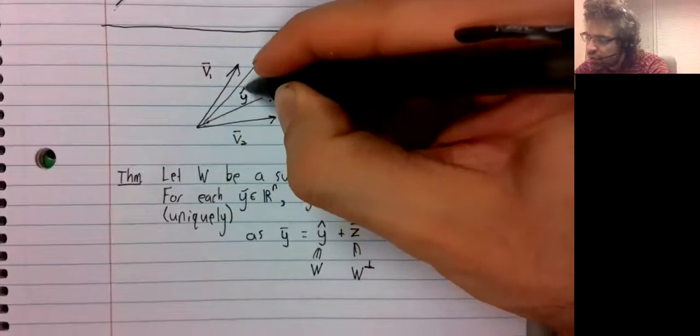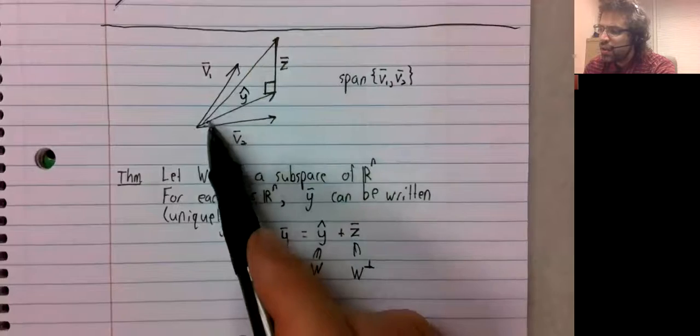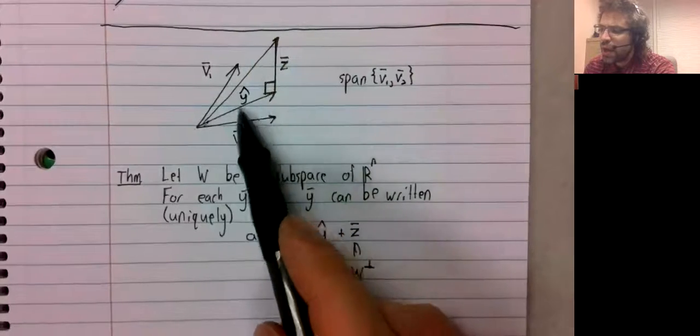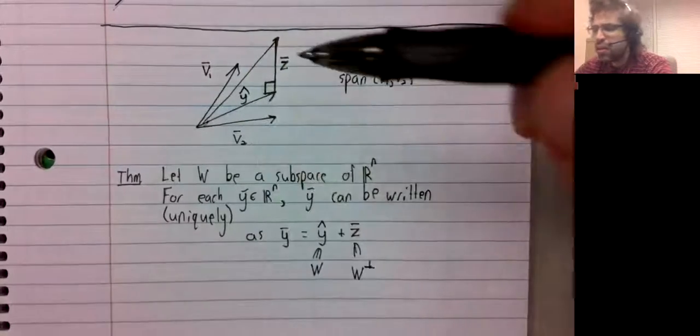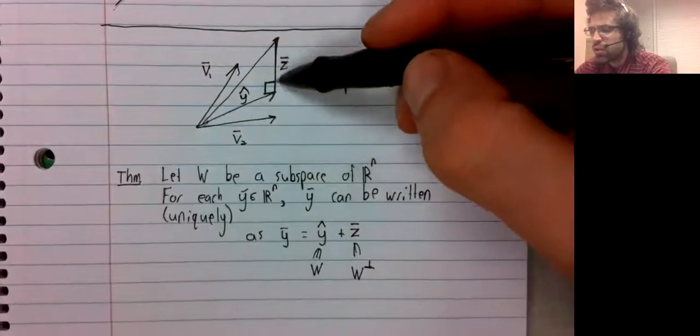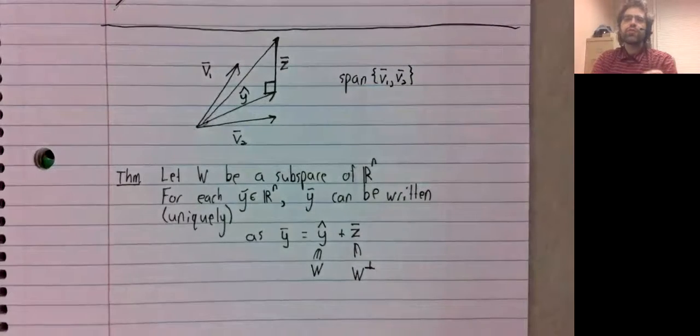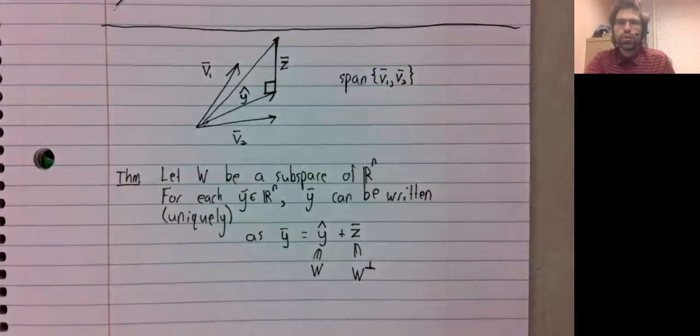So, in terms of the theorem, this vector y hat is in the plane. This vector z is orthogonal to the plane.